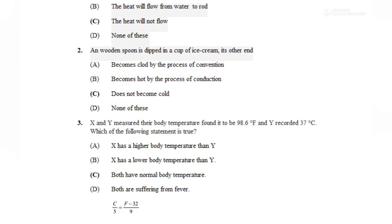Question number 2: Here we have a wooden spoon. We have learned that a wooden body is a bad conductor of heat. So the heat transfer does not occur efficiently, and therefore the other end does not become cold. The answer is option number 3.